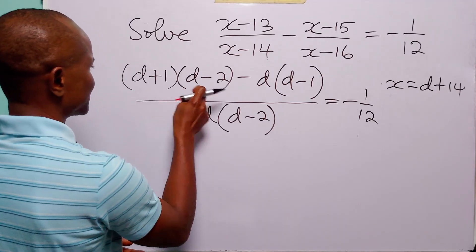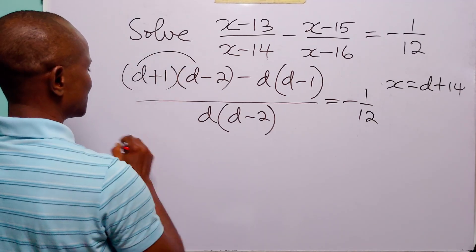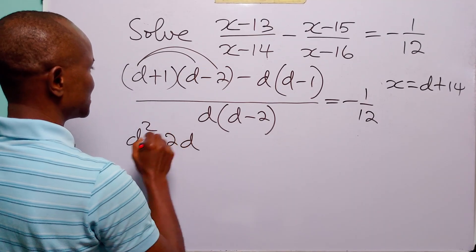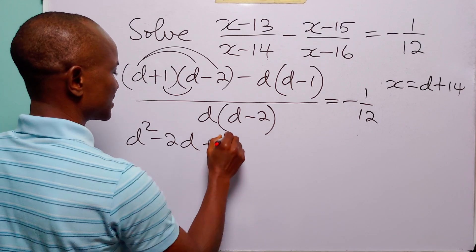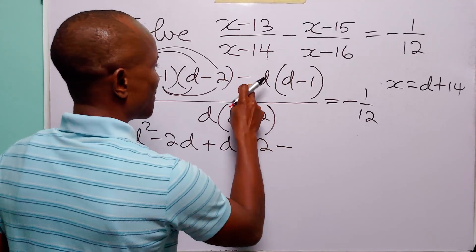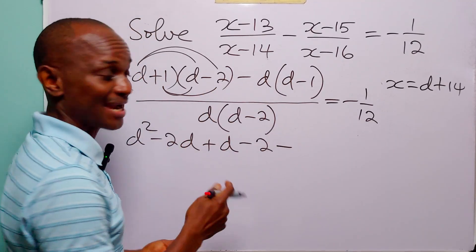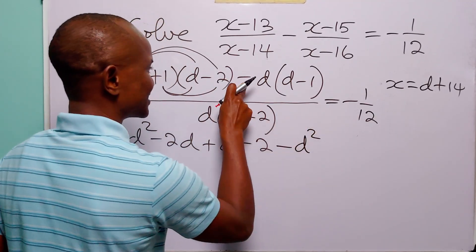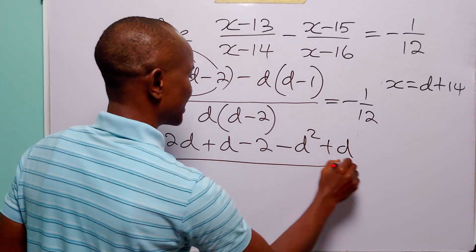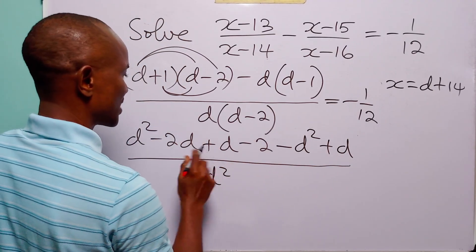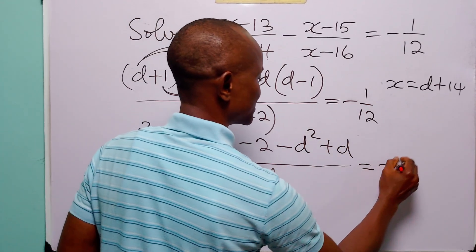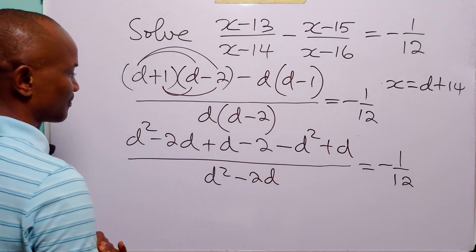To simplify this, let us start by opening these two brackets. d times d is d squared, d times minus 2 is minus 2d, 1 times d is plus d, and 1 times minus 2 is minus 2. Then minus d times d is minus d squared, and minus d times minus 1 is plus d, divided by d squared minus 2d, and on the right-hand side we still have minus 1 over 12.